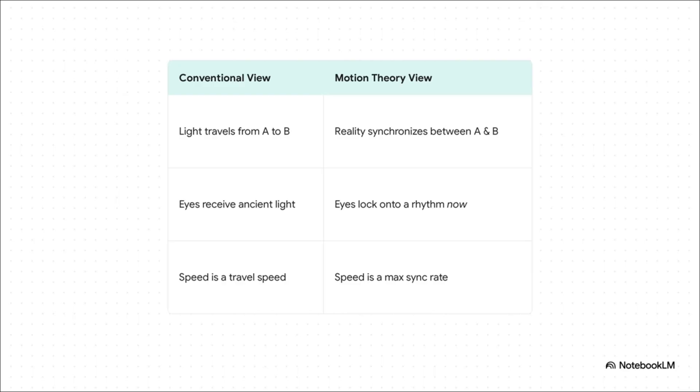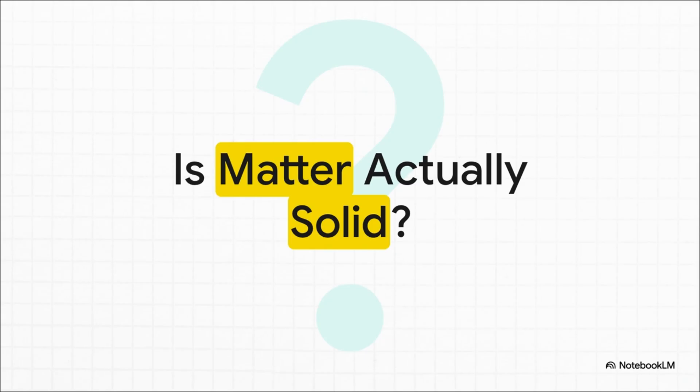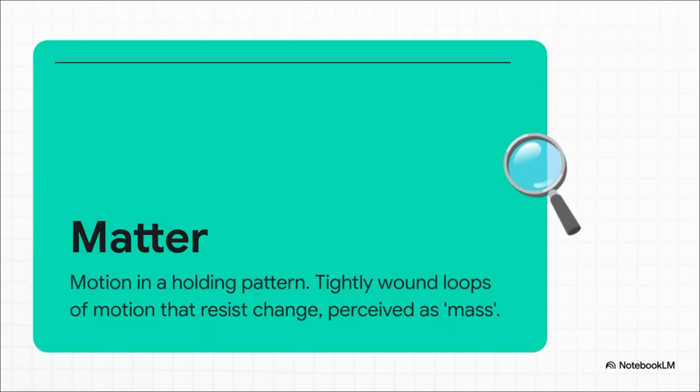Okay, let's bring this back down to earth, literally. The desk your hands are on, the chair you're in—it feels solid, right? Real, substantial. It's made of stuff. Or is it? What if that solidity is also just another illusion? That feeling of something being solid—it's just motion that's been caught in a holding pattern. Think of it like incredibly tight, stable little whirlpools of motion. These loops, these whirlpools, they resist being disturbed, and that resistance—that's what we perceive as mass. That's what feels solid. So when you break those loops, like in a nuclear reaction, the matter doesn't turn into energy—the trapped motion is just released. It was always just motion to begin with.